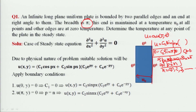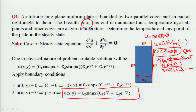By this, our solution becomes u(x,y) = c₂ sin(nx) in the x-component as well as with n substituted in the y-component.